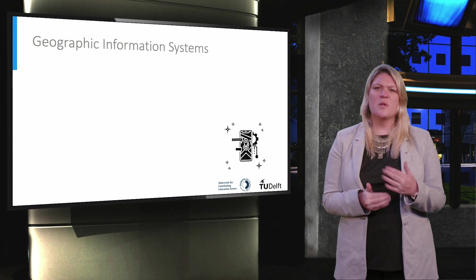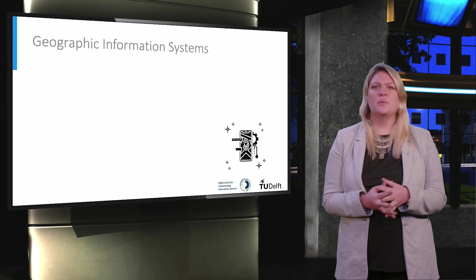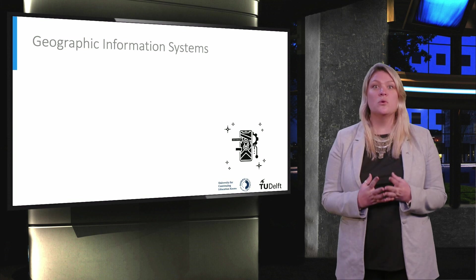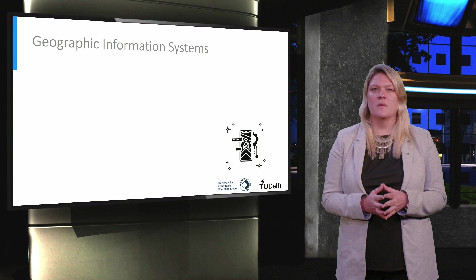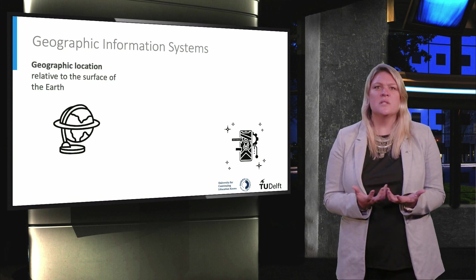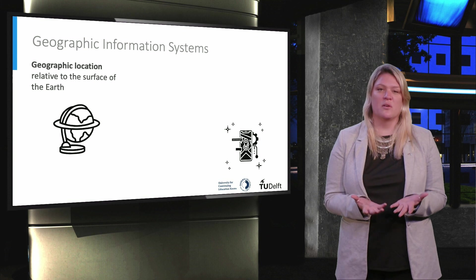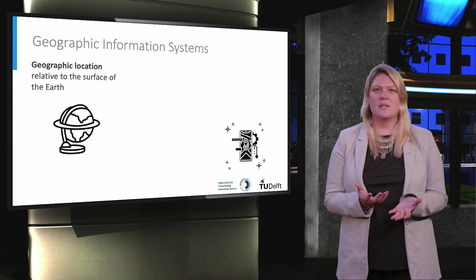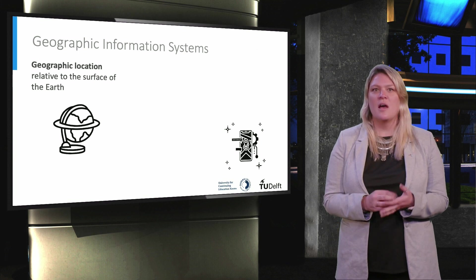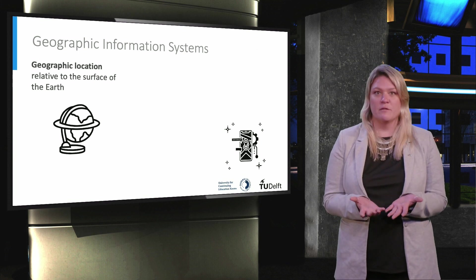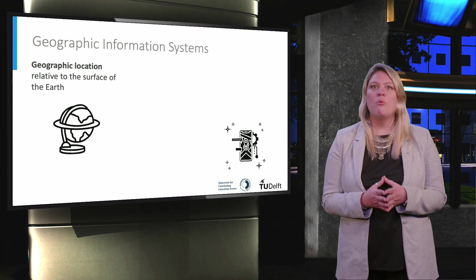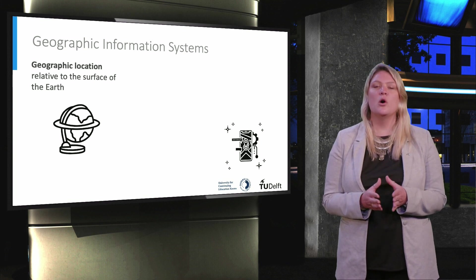So let's start from the beginning. In order to be able to discuss geographic information systems, we must understand two key concepts of these systems. First, we have geographic locations. We all have an intuitive understanding of what a geographic location is, but it's important to clarify that we mean a location that is relative to planet Earth — not, for example, the layout of a building. In other words, when we talk about geographic location, we mean something that can be pointed at on a world map.